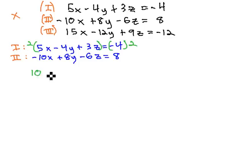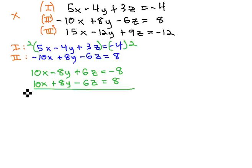So that equation becomes 10x minus 8y plus 6z equals negative 8. The first equation is still 10x plus 8y minus 6z equals 8, but as we try and add these together, you might notice what's happening is that... Oops, I lost my negative on the 10x, sorry.